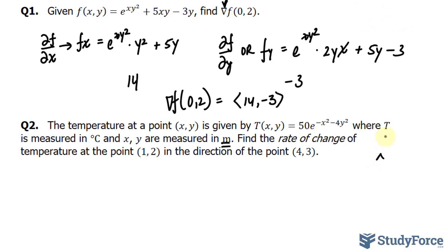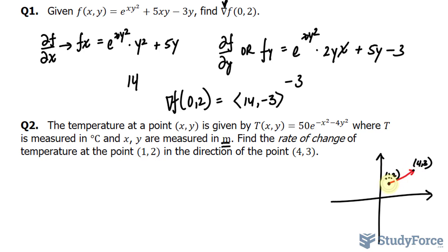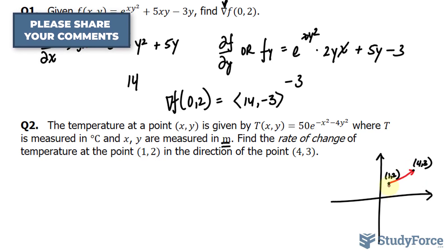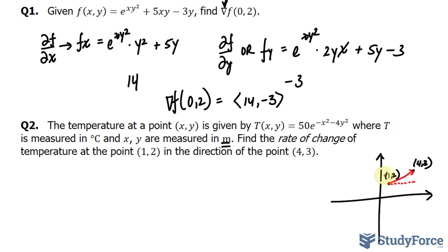If we plot these two points on an x, y plane, we have a point at (1, 2) and another point at (4, 3). Connecting these two points with an arrow, we have our vector. The horizontal length from here to here is 4 minus 1, that's 3, and 3 minus 2, which is 1. So we have a vector at (3, 1). In vector notation, we can represent this as 3i-hat plus 1j-hat.